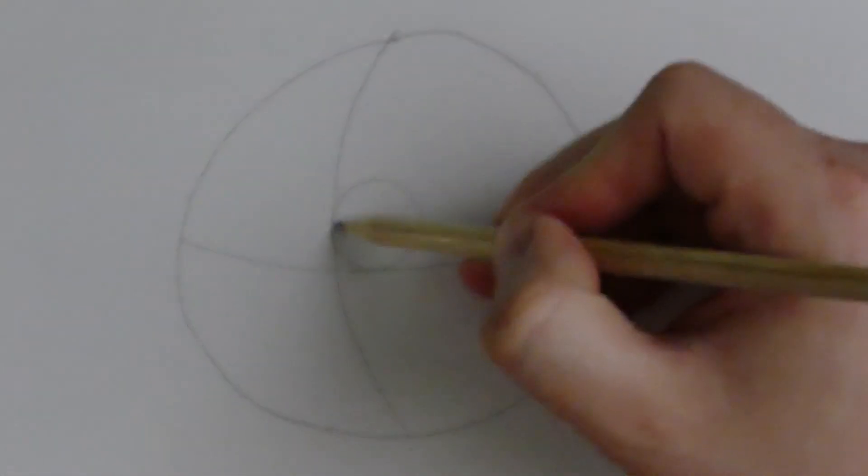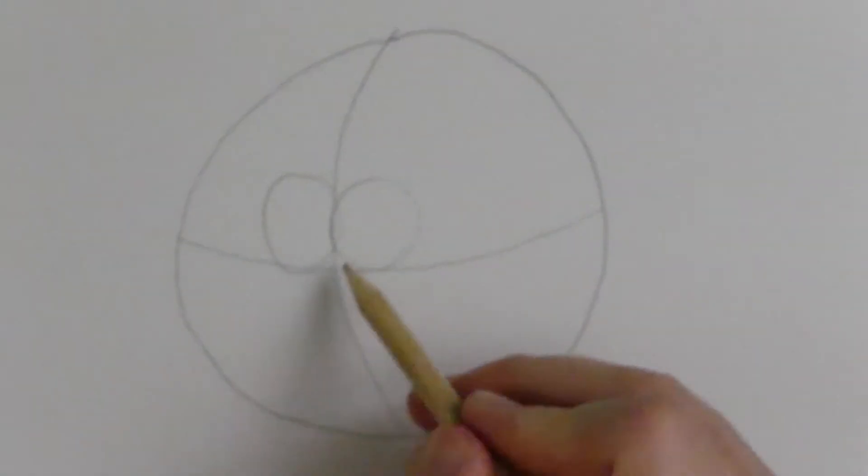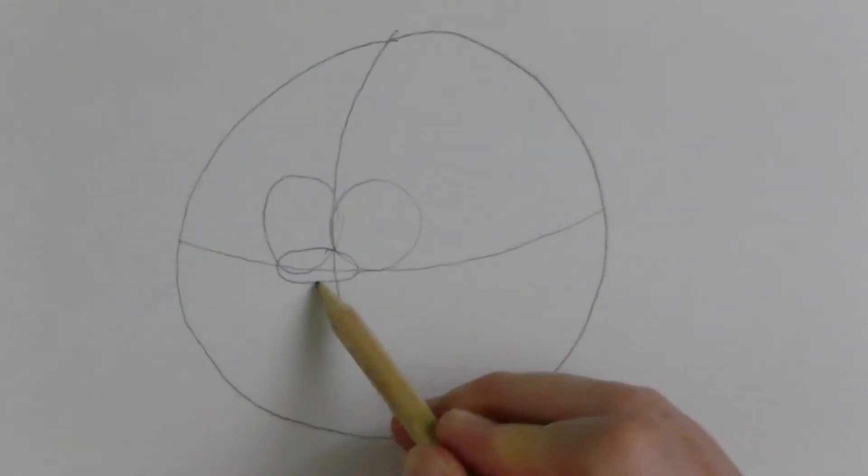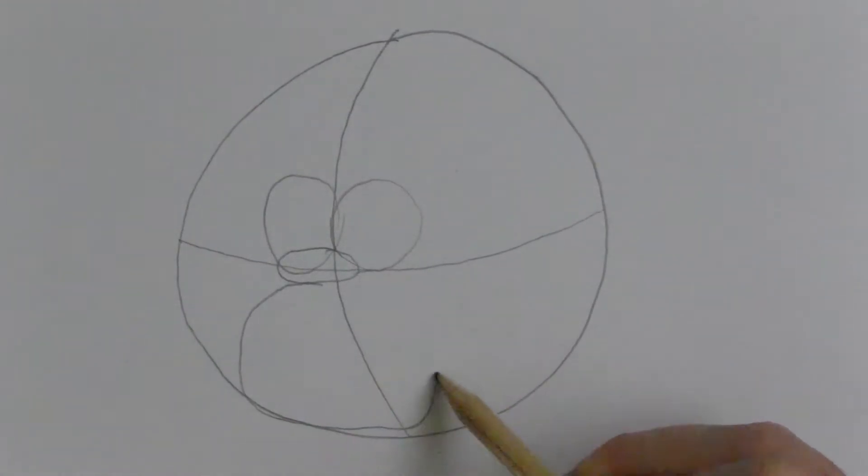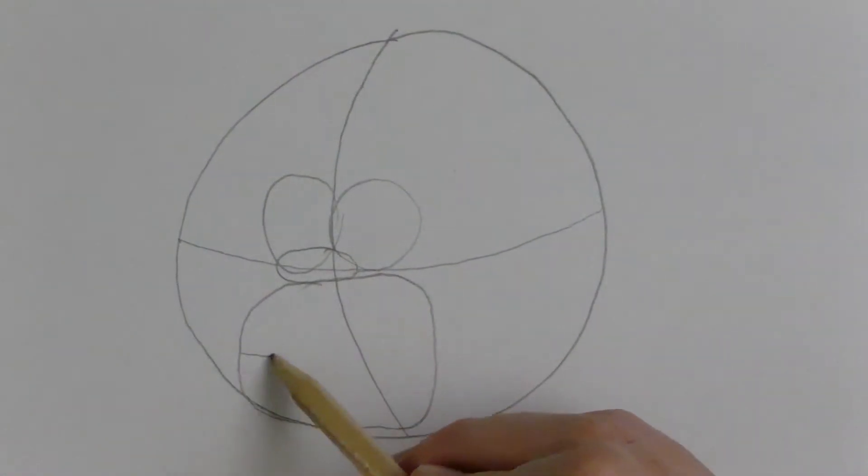You put a wonky cross in the middle of this circle and you draw two circles for Homer's eyes. Now ideally you want these circles to be the same size, however I went for different sizes because... Why the hell not?